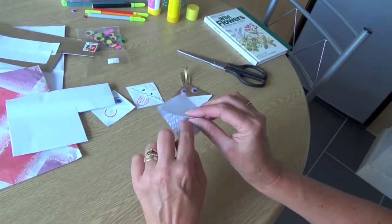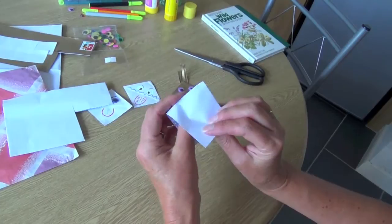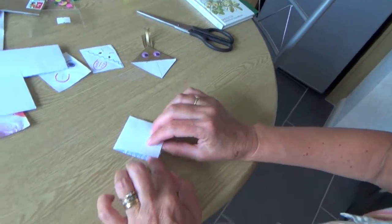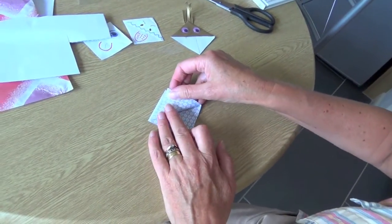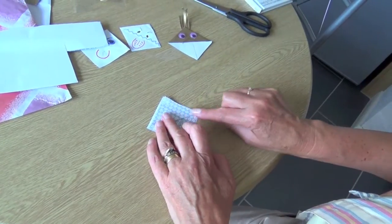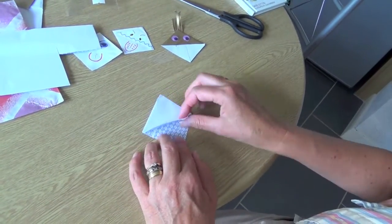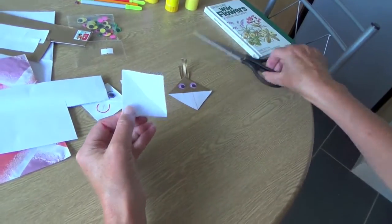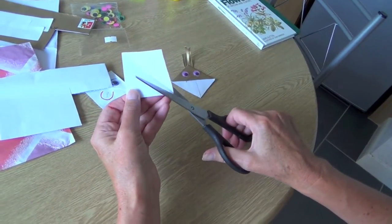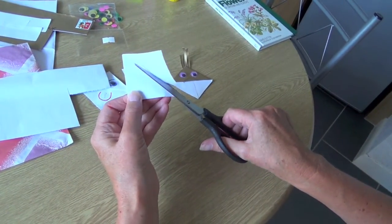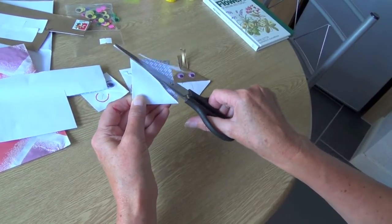So once you've done that you've got this little pocket from the corner and you simply fold up the top and crease it over. So you've got a little flap there. Then I'm going to cut that off. There we go.